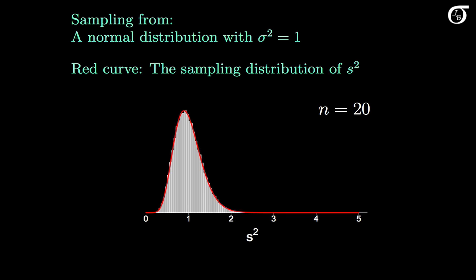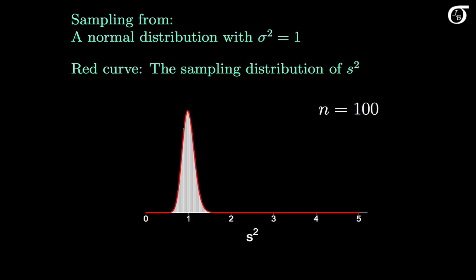If we increase the sample size to 100, the distribution of the sample variance is looking much more tightly grouped about the true variance of 1, and it's looking quite normal. But what happens when we sample from non-normal distributions?